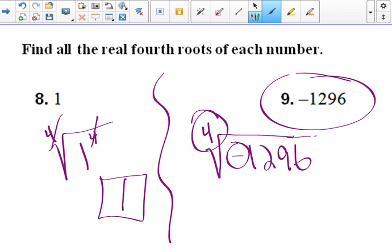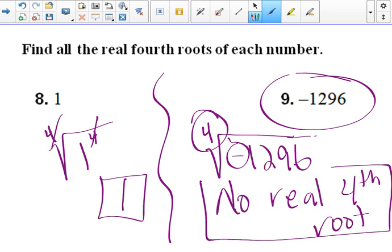There's no way we can get a negative out of that. So because our index is even, you cannot get a negative number by multiplying them. So there is no real fourth root. And that's your answer.